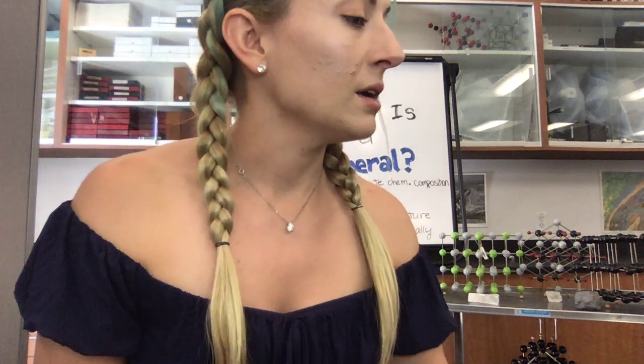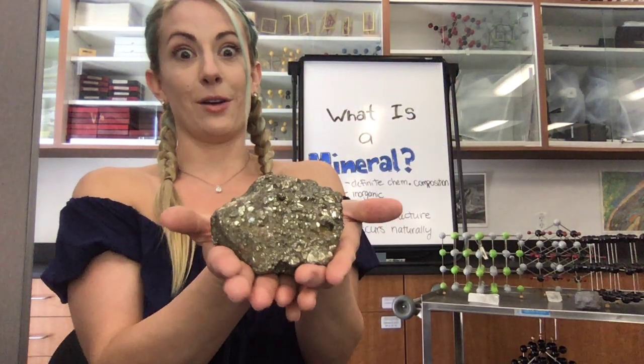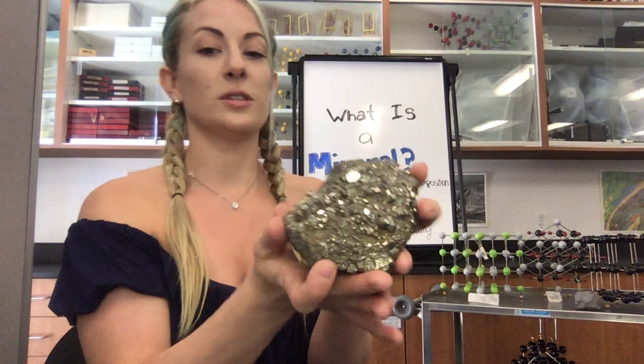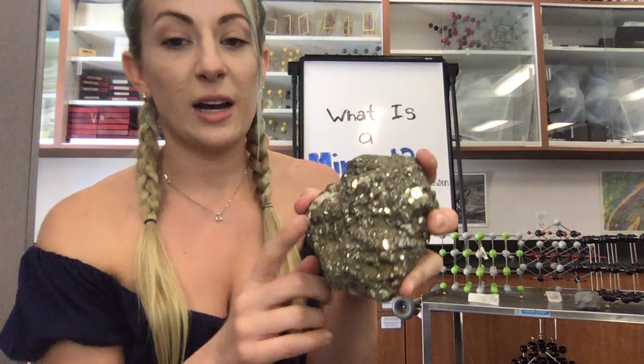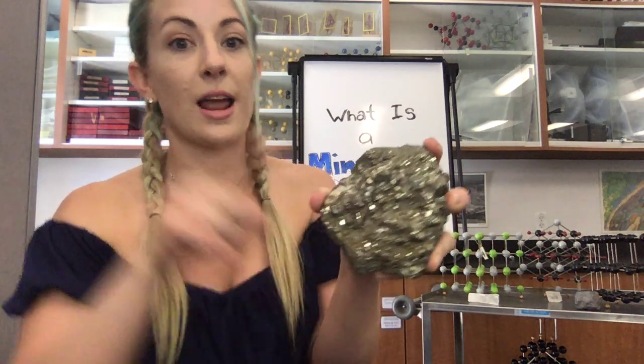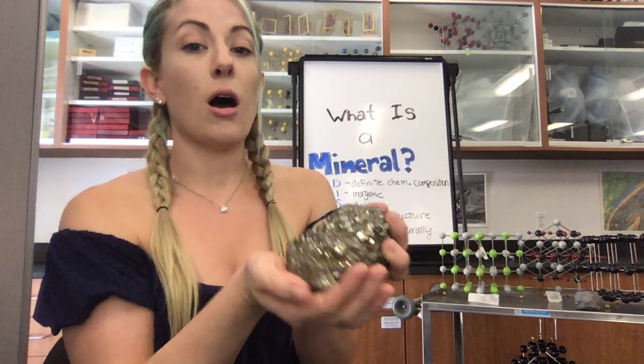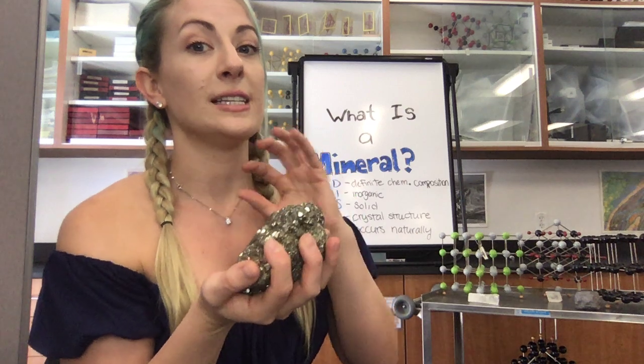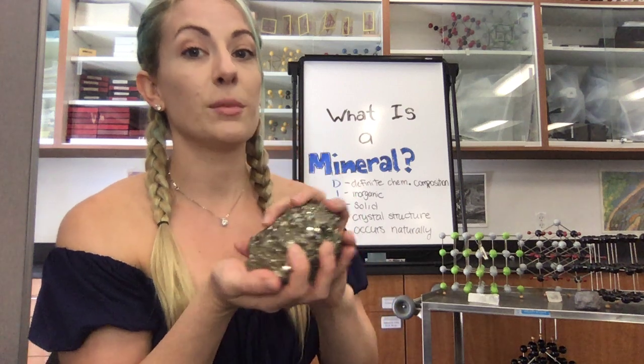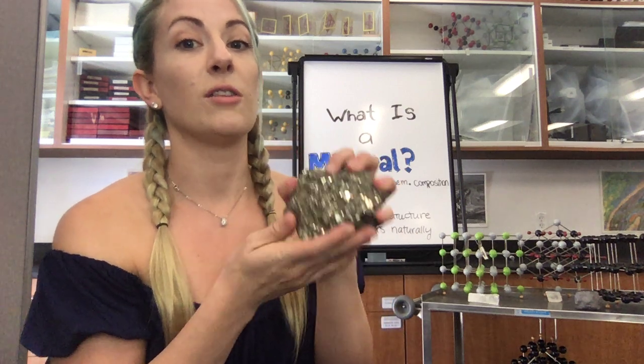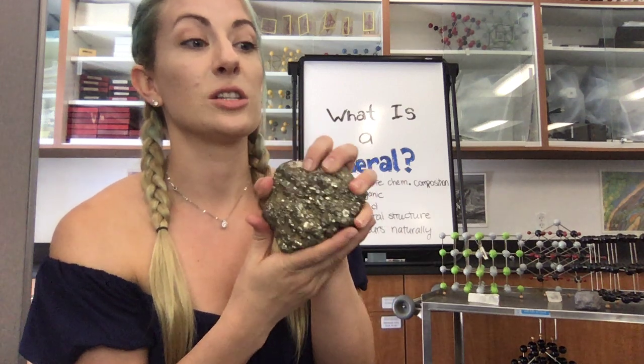Something else, however — let's take this one here: pyrite, also known as fool's gold. This one is made up of sulfur and iron. But all pyrite is going to have the definite chemical composition of being iron and sulfur.